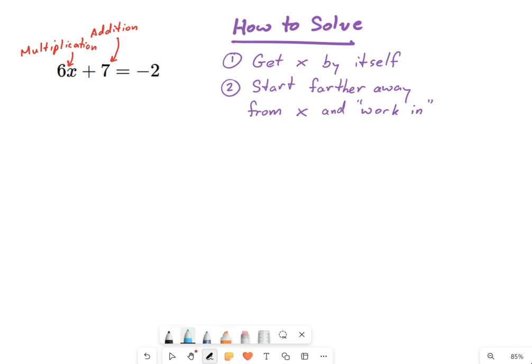So I'm going to have to work those things out by doing the opposite operations. I'm going to start with that 7 because it's further away from x. And I'm going to hit it with a minus 7. If I do that on the left, I have to do it on the right also. I have to do the same thing on both sides.